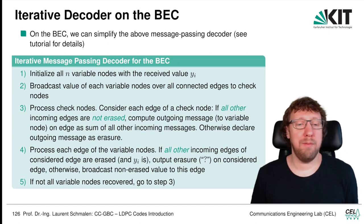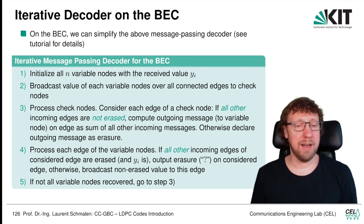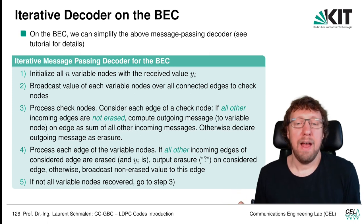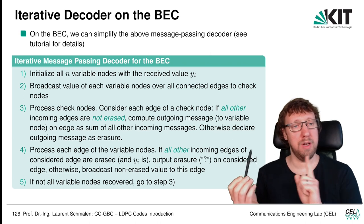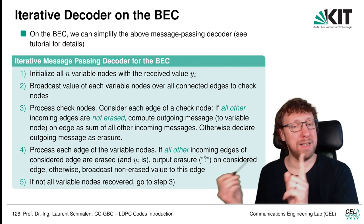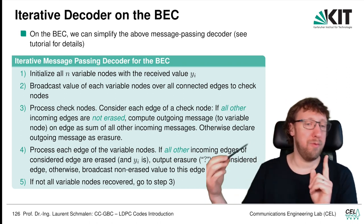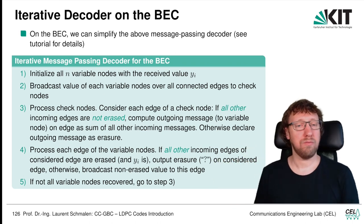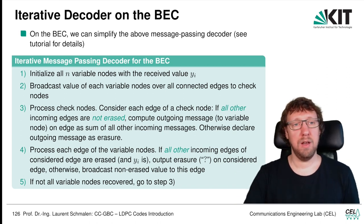We do the same for the variable nodes, but slightly differently. If all the incoming messages are erased, the outgoing message must be erased. Otherwise, if one of the messages is not erased, we have a repetition code — if one message is not erased, we know all the others because it's just repeated, and we can broadcast this value. Then we just repeat this over and over again. That's the simplified decoder on the binary erasure channel.